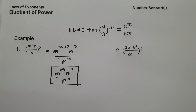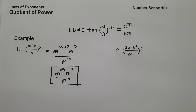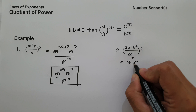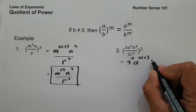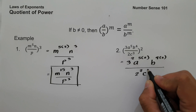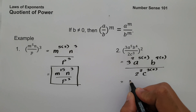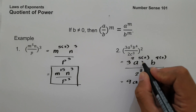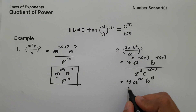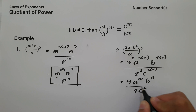On example number two, we have quantity 3a raised to 5, b raised to 4, all over 2c raised to 3, raised to 2. Distributing the exponent on numerator and denominator: 3 raised to 2, a raised to 5 raised to 2, b raised to 4 raised to 2, over 2 raised to 2, c raised to 3 raised to 2. Simplifying: 3 squared is 9, a raised to 10, b raised to 8, over 2 squared which is 4, c raised to 6. And this will be our answer.